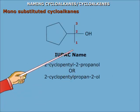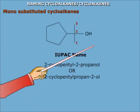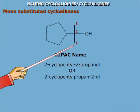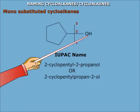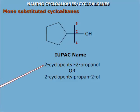When the attached acyclic part contains a functional group, then the cycloalkane is taken as the substituent. Here the acyclic part has the OH group, so it is named 2-cyclopentyl-2-propanol, or 2-cyclopentylpropan-2-ol.